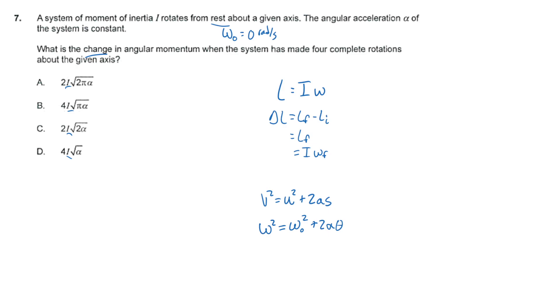So in our case, what is this going to be? Well, as I said earlier, we are starting from rest. So we have zero squared plus two and then alpha and then times theta. And we are given that the system has made four complete rotations. Well, each rotation is two pi radians. So we have theta equal to four times two pi, which is eight pi radians.